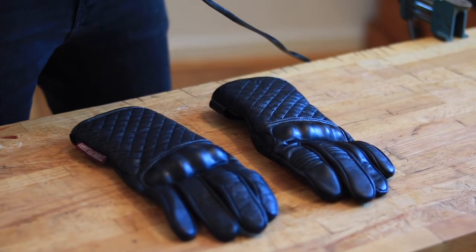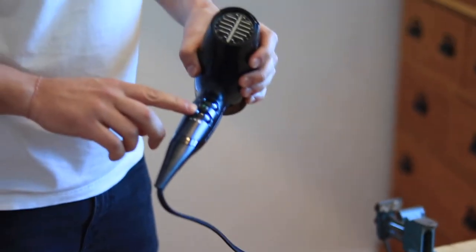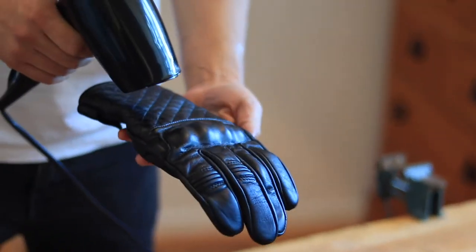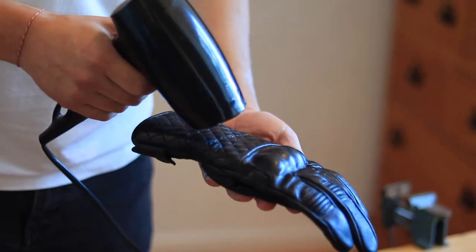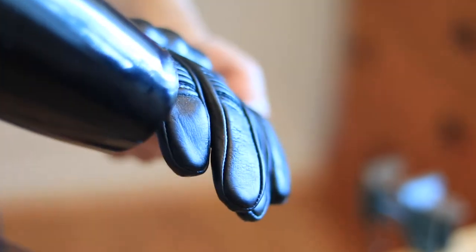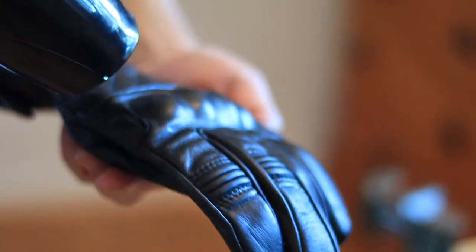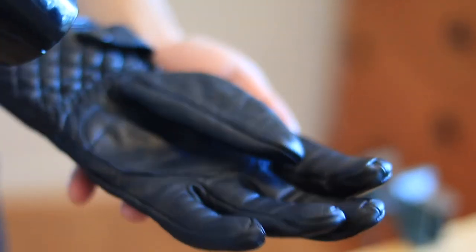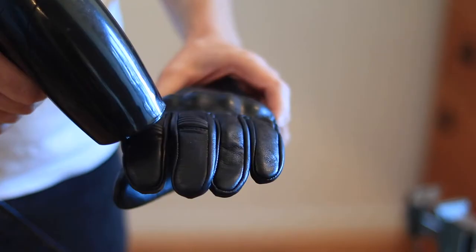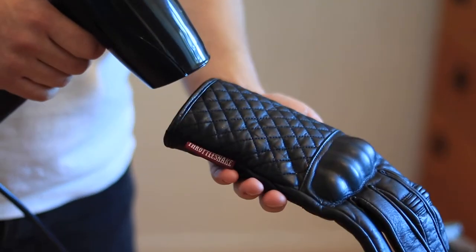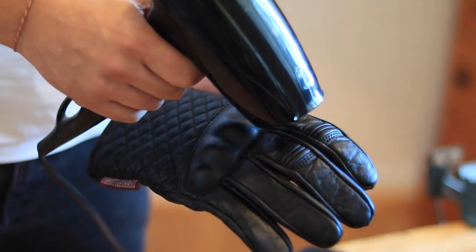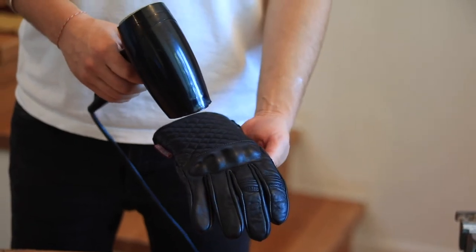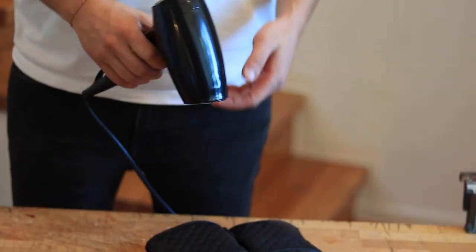Last but not least, you can either wait for the wax to settle in the leather, or you can help it inside by applying more heat with a blow dryer this time. Switch it to the highest setting, and slowly heat the glove until you see the wax being soaked into the seams.